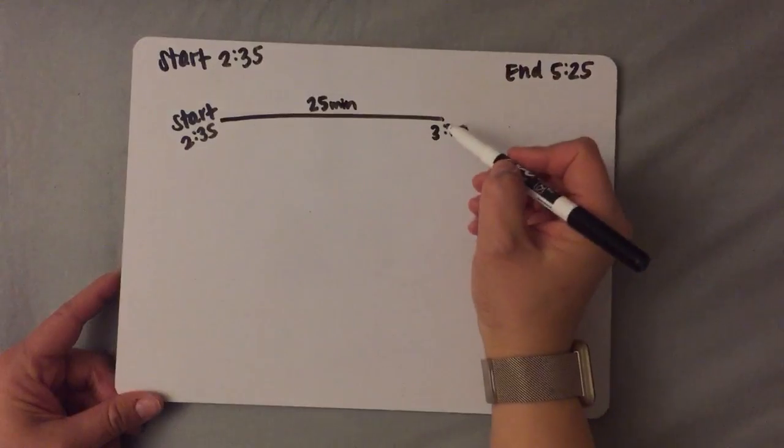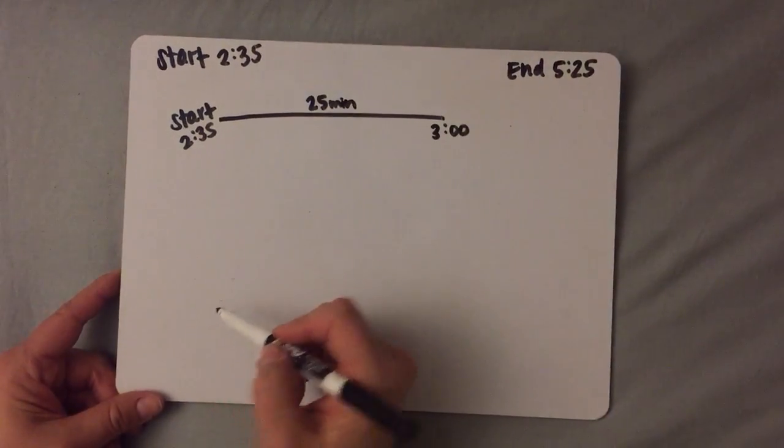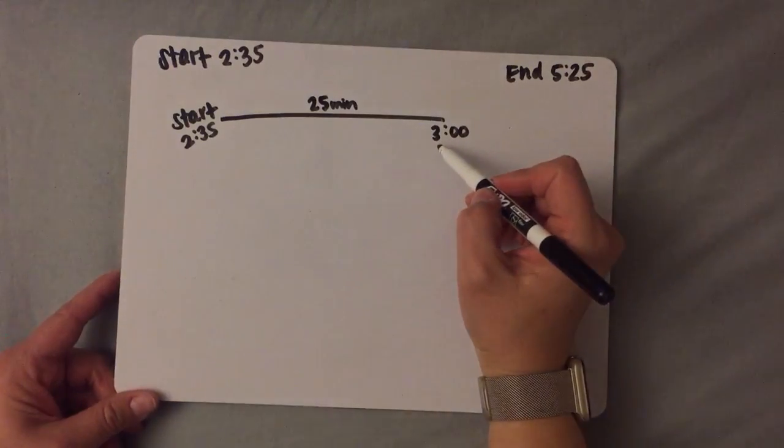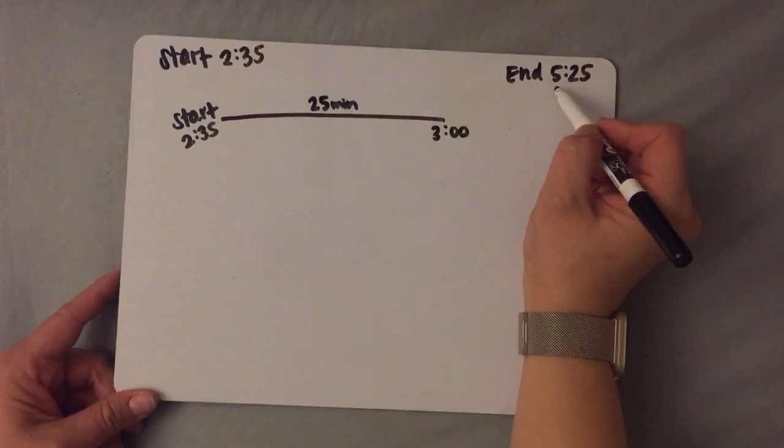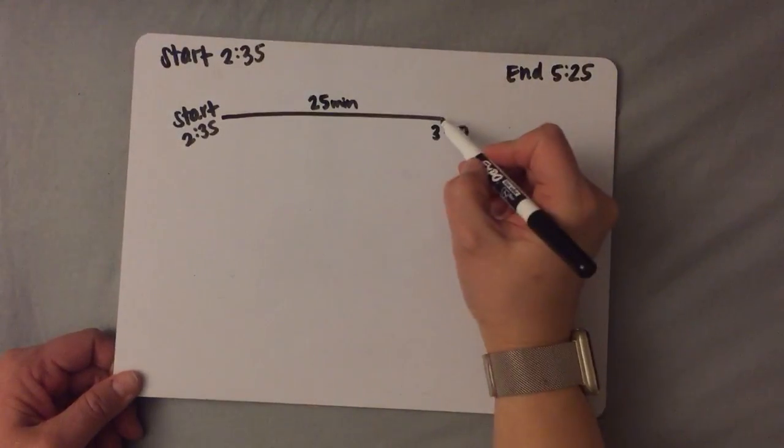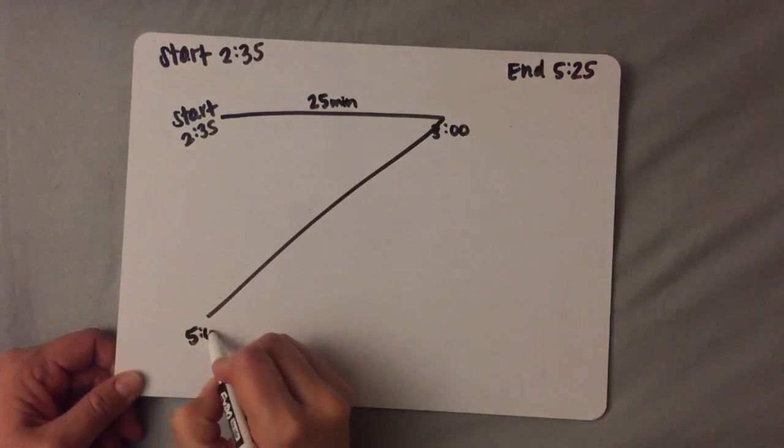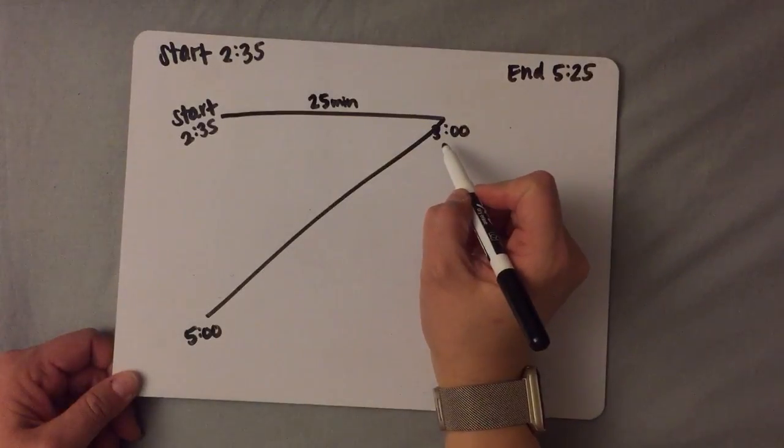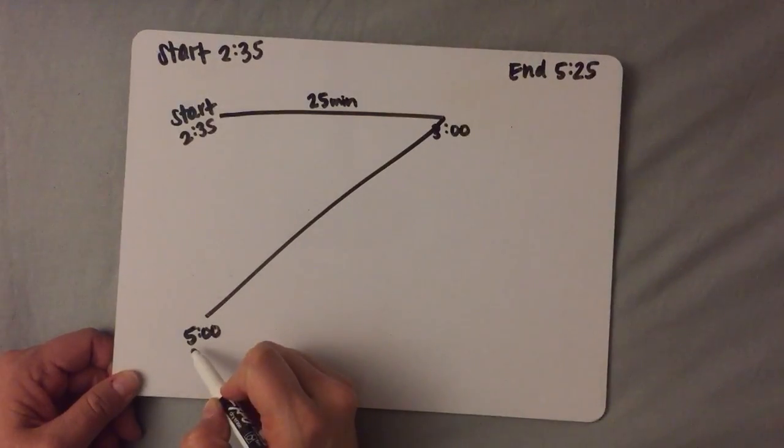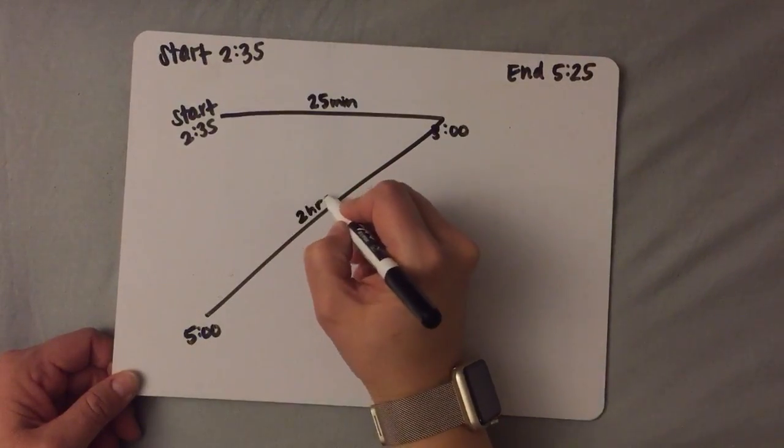The next step is to go from this top right corner down here to the bottom left and you're going to go from 3 o'clock to the hour of the end time which is 5 o'clock. So you're going to zoom on down here to 5 o'clock and write down the amount of hours it takes to go from 3 o'clock to 5 o'clock and that is 2 hours.